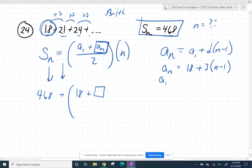So it's okay that we don't know that. If we simplify this, we get 3n plus 15, and I'm going to sub that in for my a sub n there.